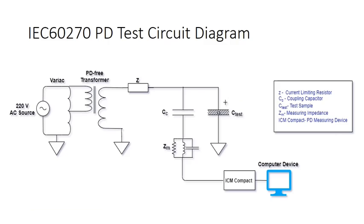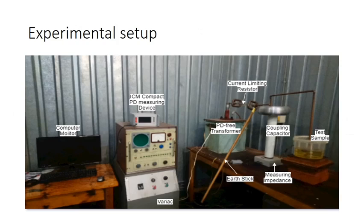This circuit represents the standard partial discharge test circuit. This is the practical experimental setup used for partial discharge measurement in the high voltage laboratory. The voltage is slowly increased using the variac until partial discharges are observed in the partial discharge measuring device. The results are then stored in the computer for further analysis.